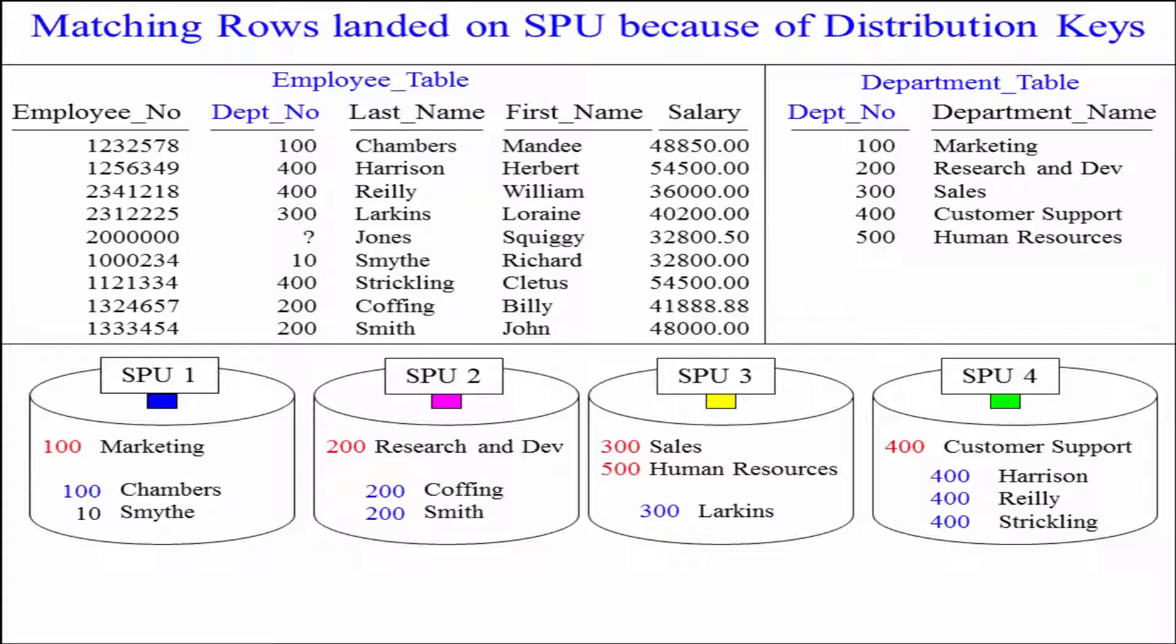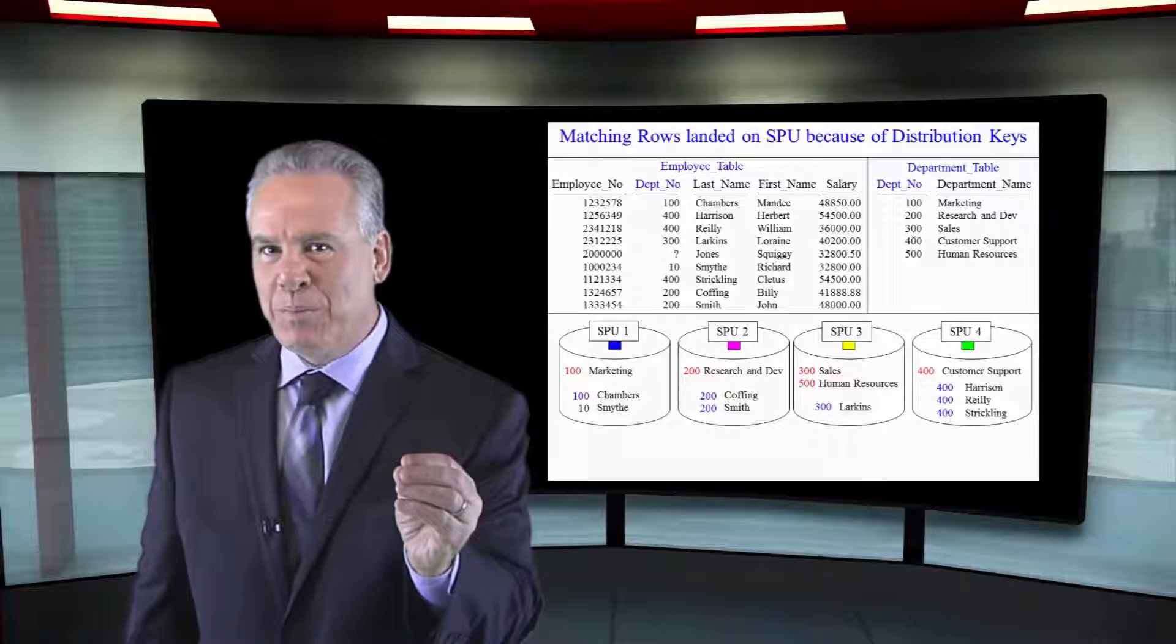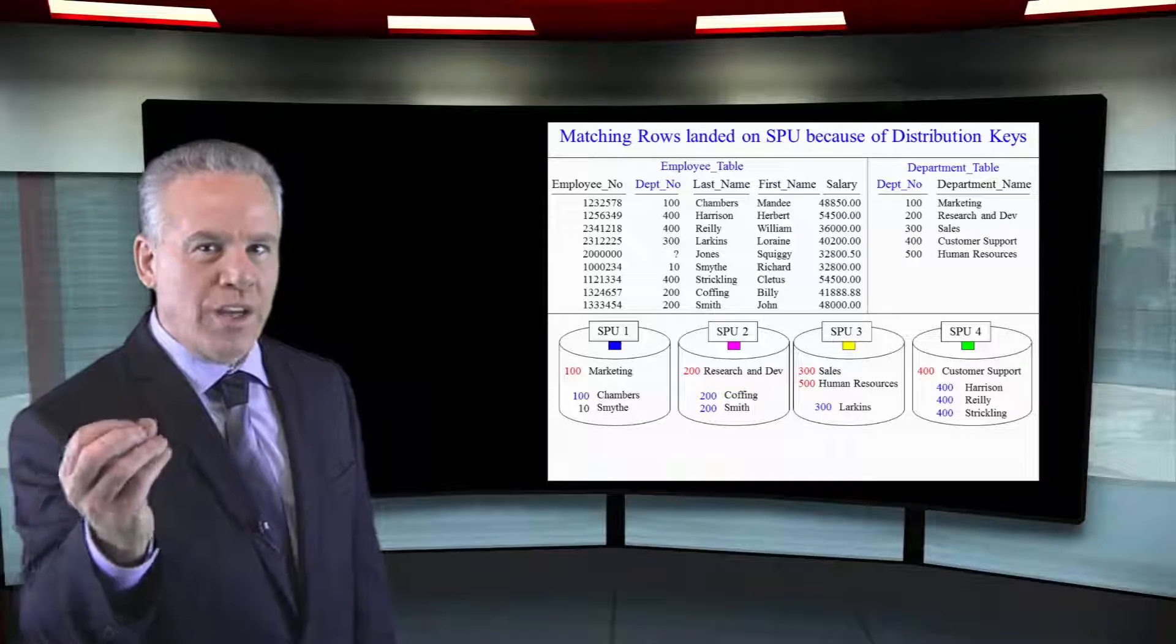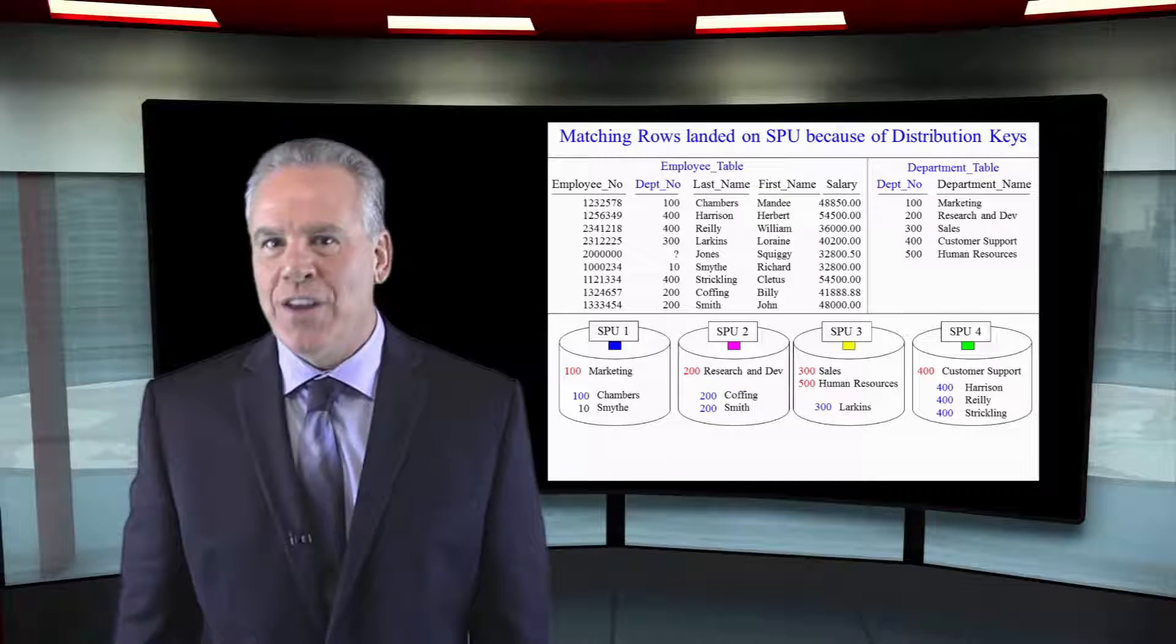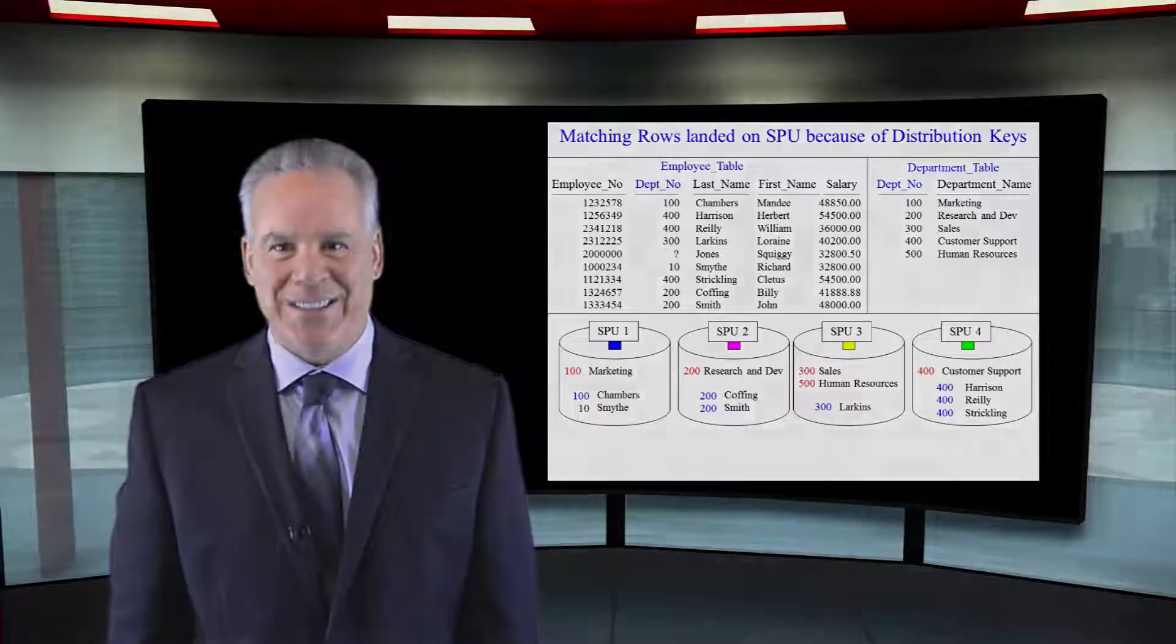It hashes things consistently, and that's how we've been able to get the matching rows on the same SPU before we even had to join them. Now every join will never have any data movement, and that's the fastest join you can have in Teradata. It's called co-location.